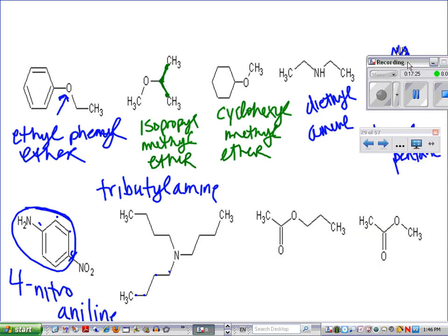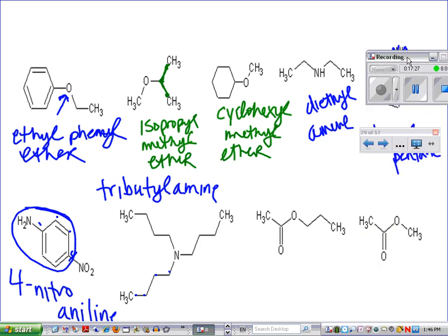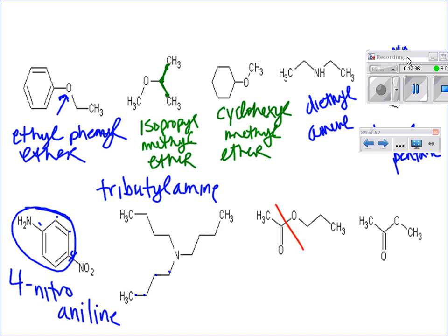Next is an ester. Draw your line between the two oxygens. The first name is from the single-bonded oxygen side: one, two, three carbons — that's propyl. The last name is from the double-bonded oxygen side: one, two carbons — ethane, drop the -e, add -oate: ethanoate. So the name is propyl ethanoate.